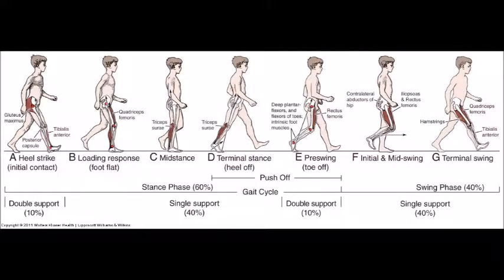Within the phases of the gait cycle, calcaneal gait pattern affects terminal stance and pre-swing the most, since these two phases require plantar flexion to push off the ground.